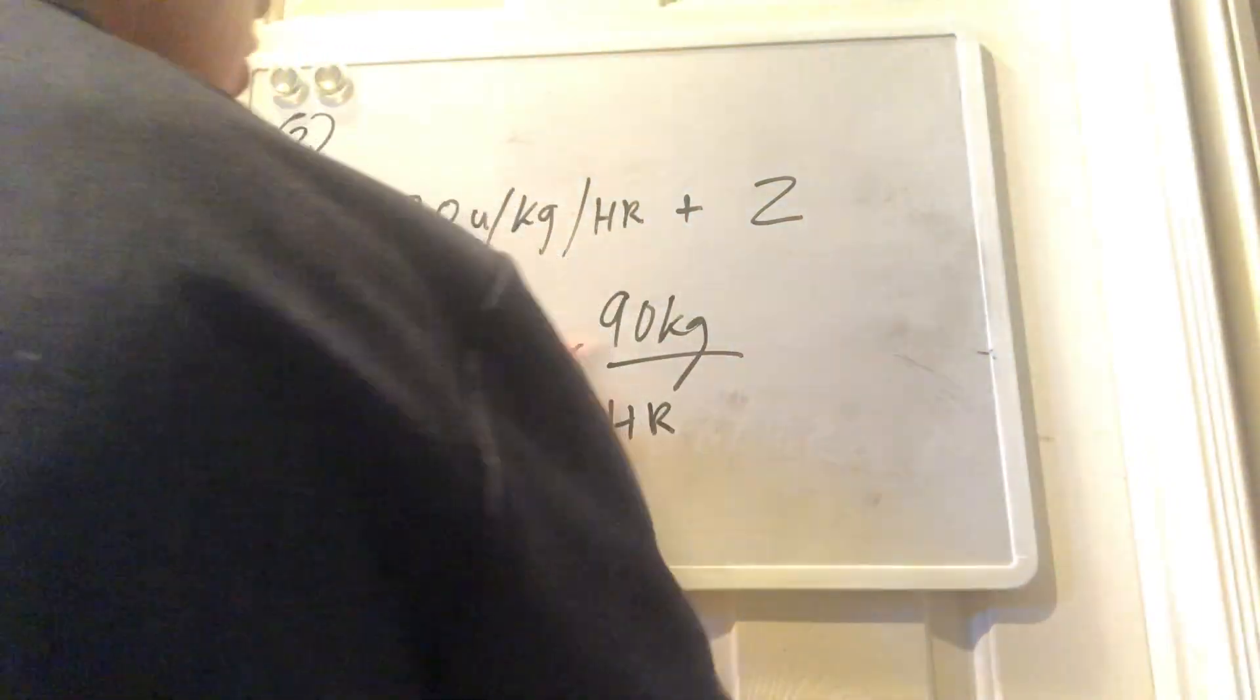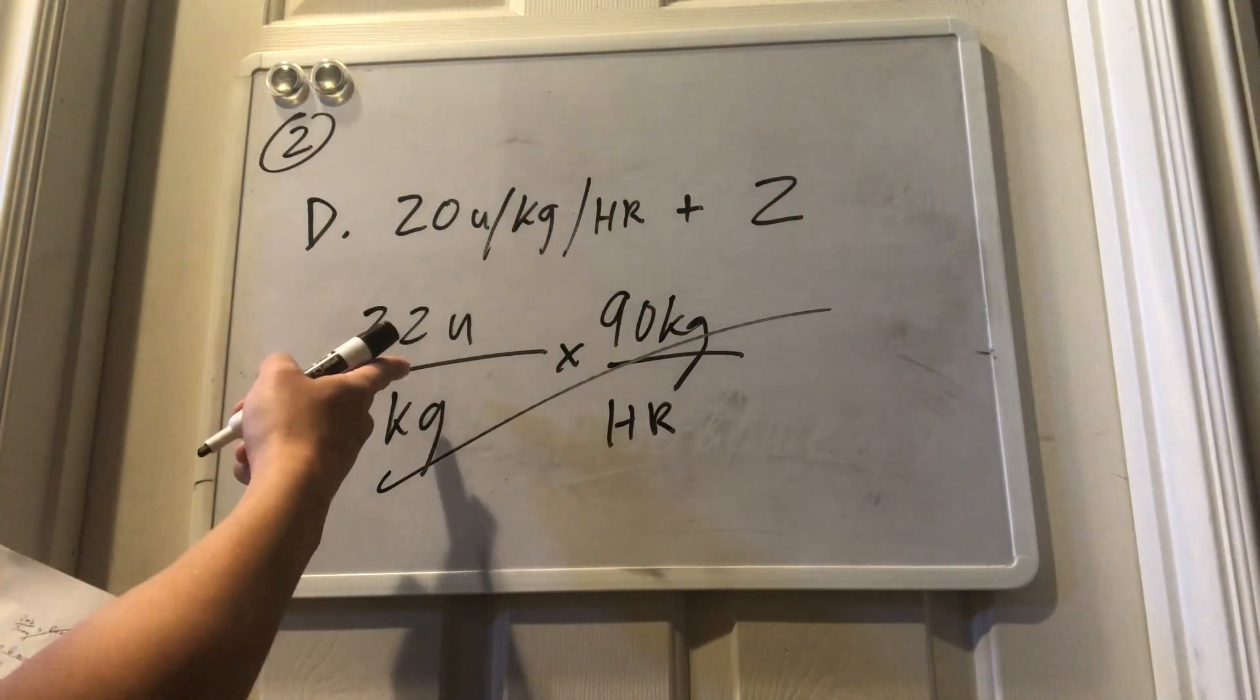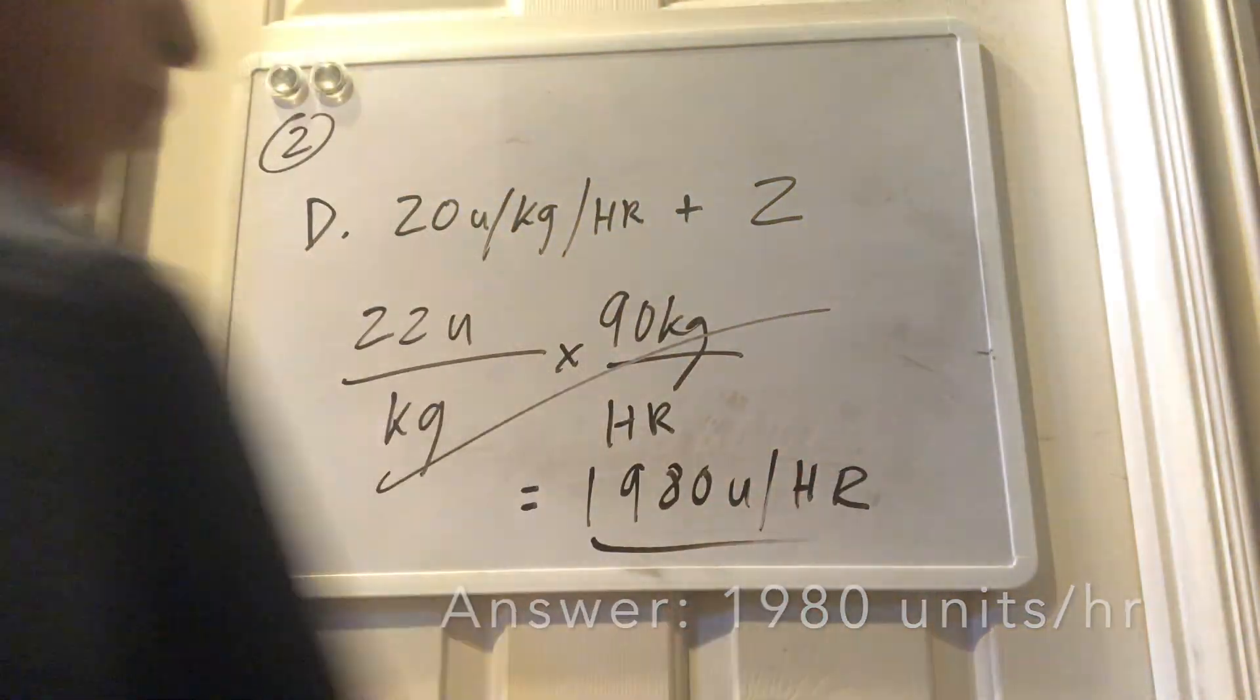We take the weight of the patient, which is 90 kilograms, cross out the kilograms, so we're left with 22 units per hour. We're going to be left with 1980 units per hour.